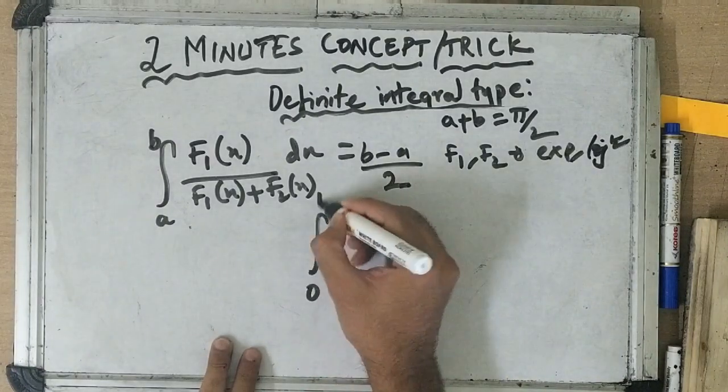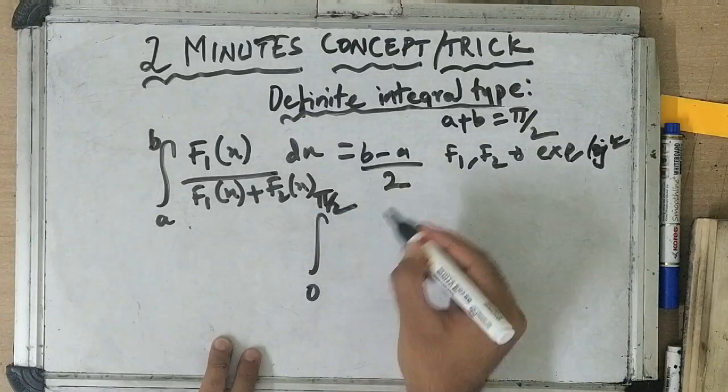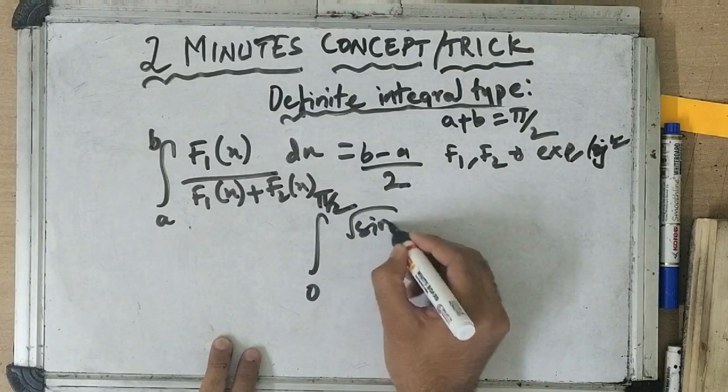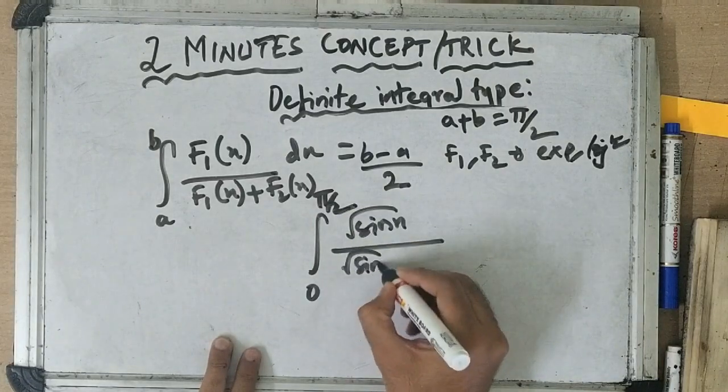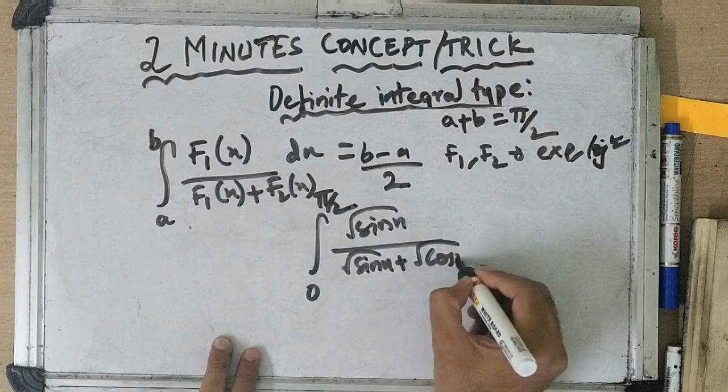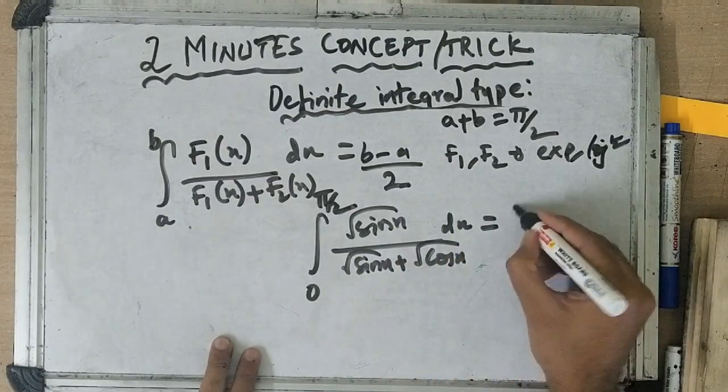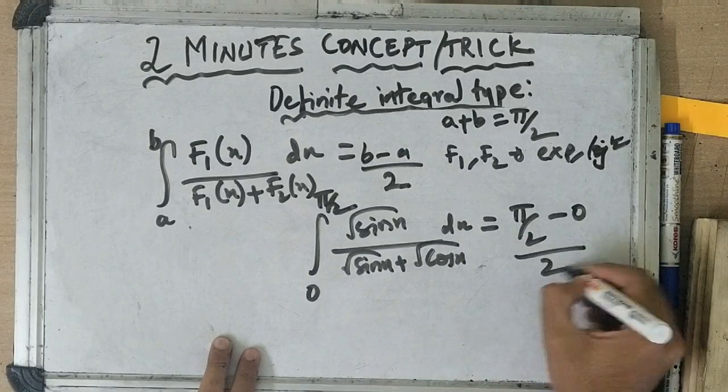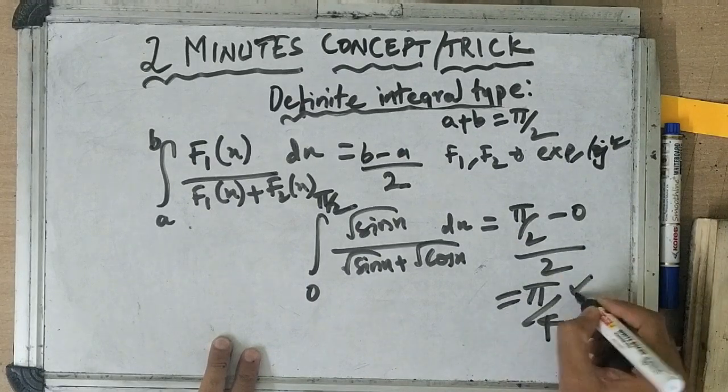So if you have something like 0 to pi by 2 root of sin x by root of sin x plus root of cos x dx, the answer is pi by 2 minus 0 by 2, pi by 4.